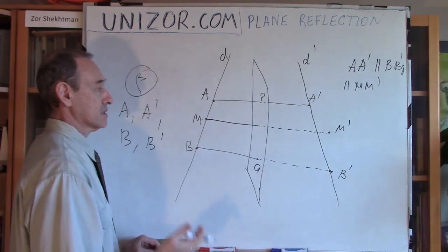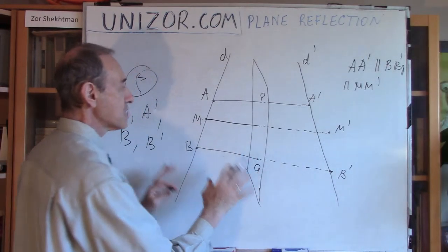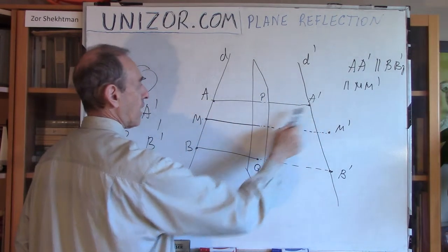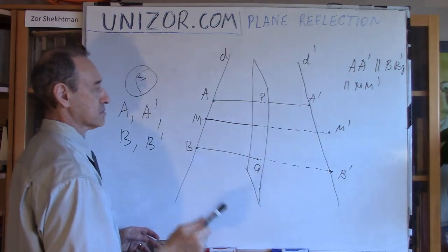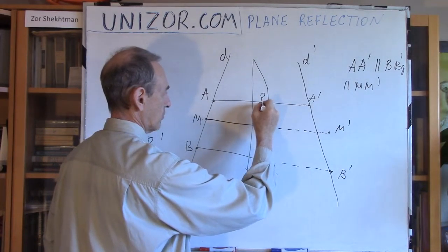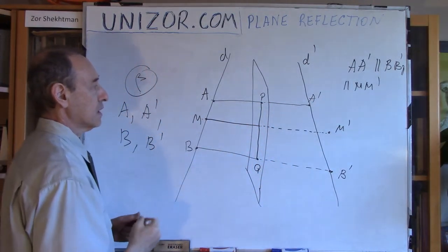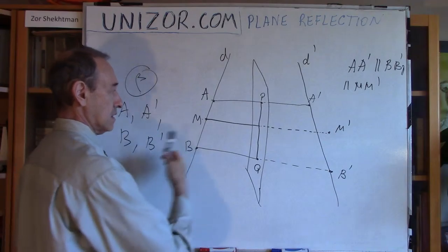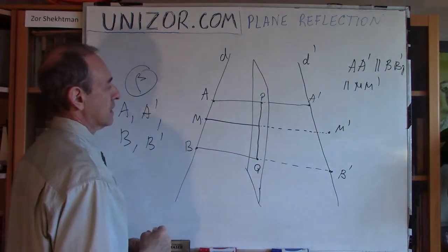What I'm doing now is very simple: I'll forget about three-dimensional space and consider everything within plane beta, which is the plane of my board. AA prime belongs to this plane, BB prime belongs to this plane, and MM prime also belongs to this plane. Now, connecting P and Q gives the intersection between the beta plane and my plane of reflection. The intersection is a straight line — point P belongs to this line, point Q belongs to it — so PQ is a straight line. I will reduce this problem completely to a two-dimensional case.